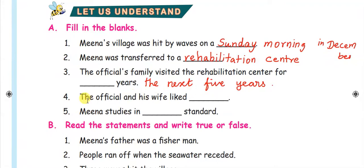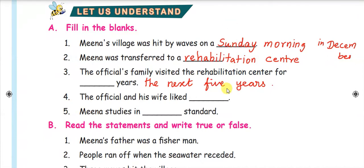Question 4: The official and his wife liked Meena. Aluvaalarum avaradhu manaviyayum Meena-vey anbuseidarkal, virimbeenaarkal. You have to use a capital letter here because Meena is a proper noun — M-E-E-N-A. The official and his wife liked Meena.